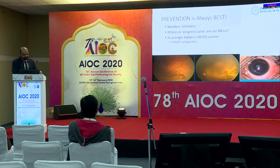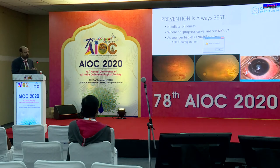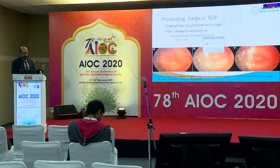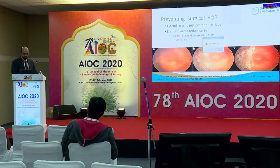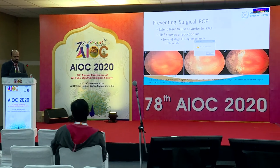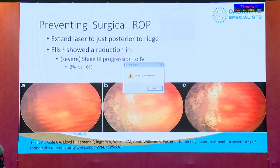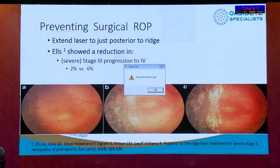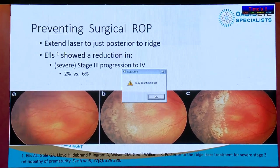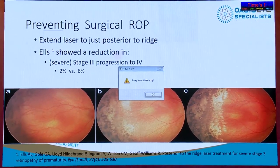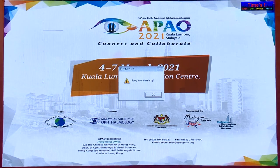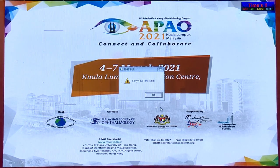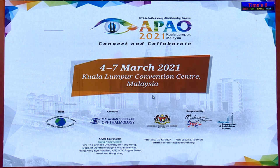Prevention is always best — you want to laser these children. A study by Anna Els shows that if you extend the laser a little bit posterior to the ridge, you reduce the rate of progression from 6% to 2%. So I would advise lasering a little further to the ridge. Especially in cases of APROP, there are avascular zones that need to be lasered too — just because you see a large vessel doesn't mean the retina is fully vascularized. I'd also like to invite you to the APAO in Kuala Lumpur in 2021. Thank you.